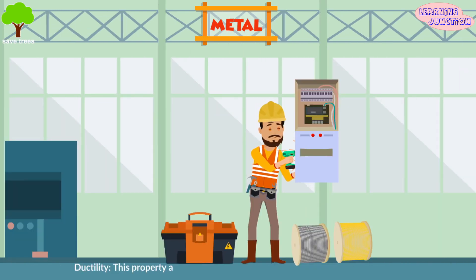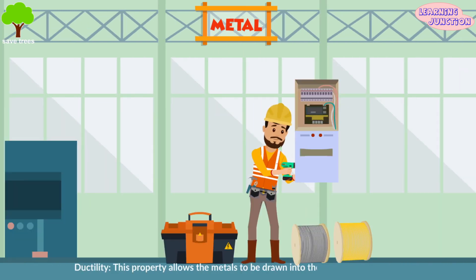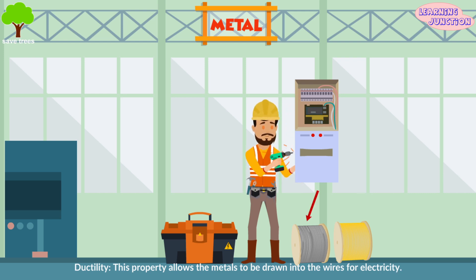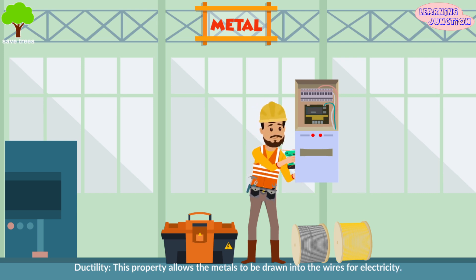Ductility — this property allows the metals to be drawn into wires. Metals like copper and aluminium wires are used in electric connections.